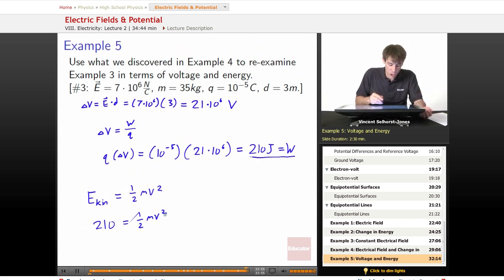We start solving it out. We've got that 2 times 210 divided by our mass of 35 kilograms. We take the square root is going to equal the velocity. We punch that all out through our calculator, and we get the exact same velocity we did before, 3.46 meters per second.